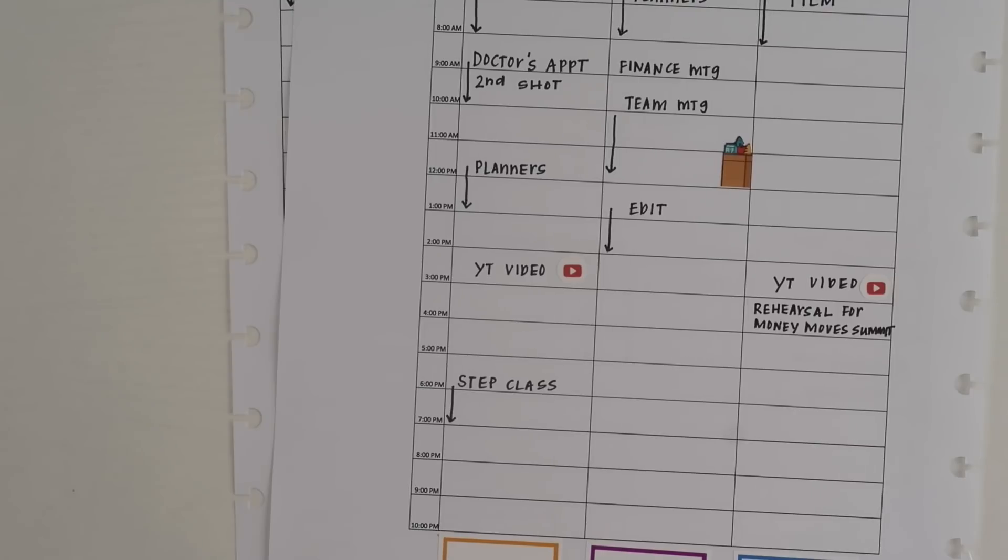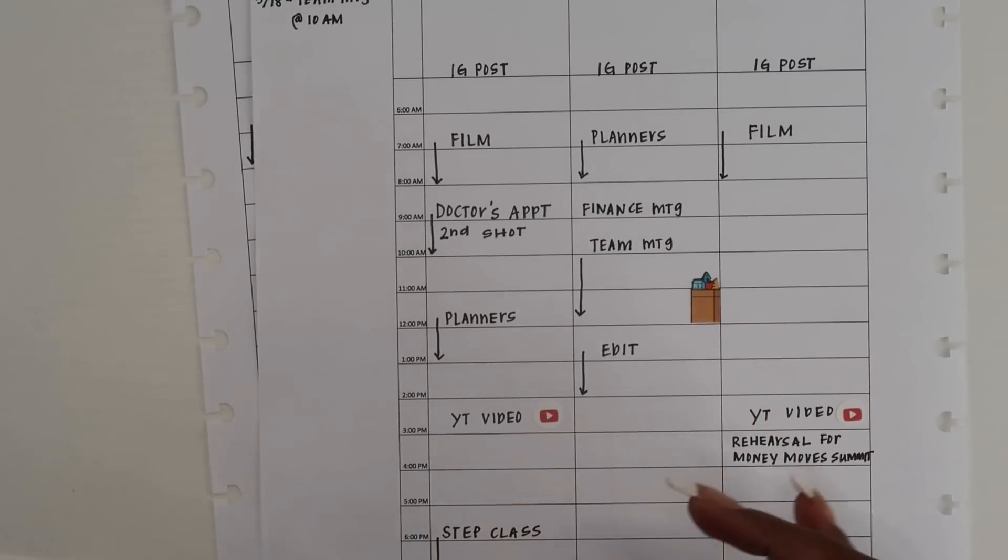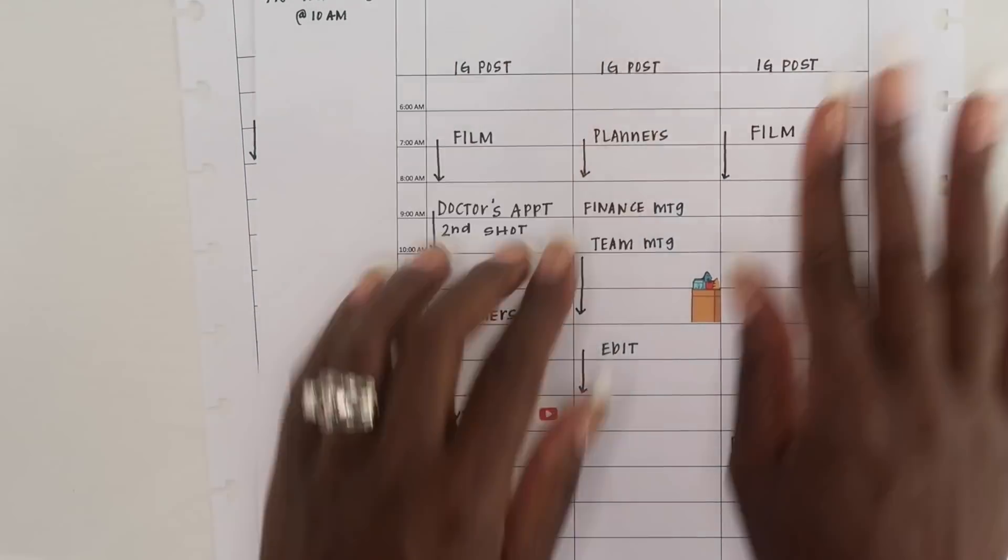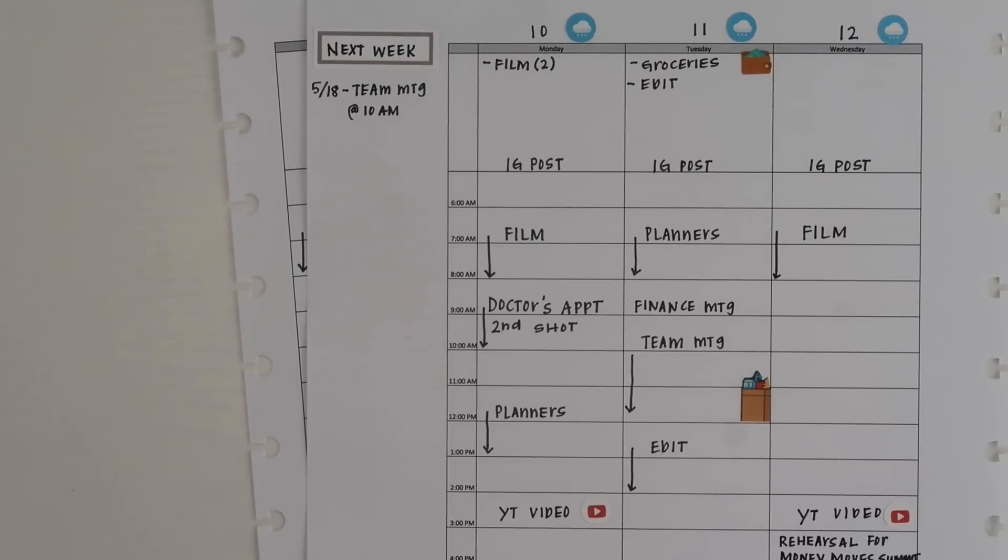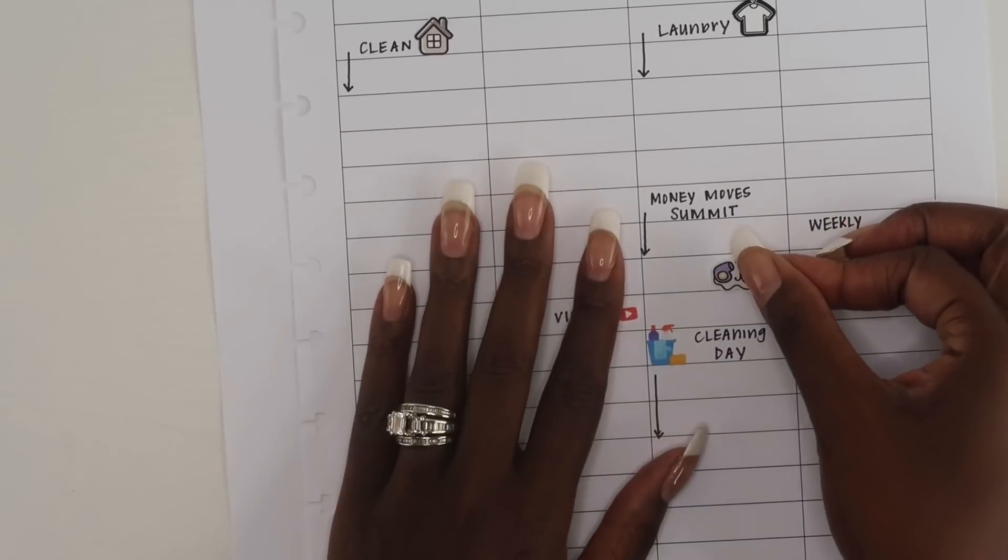I do have a dedicated planner in which I will jot down everything that I have eaten for my breakfast, lunch, and dinner. That's my personal planner. But in this one I do like to keep track of dinner because this is my catch-all. It has a little bit of everything.